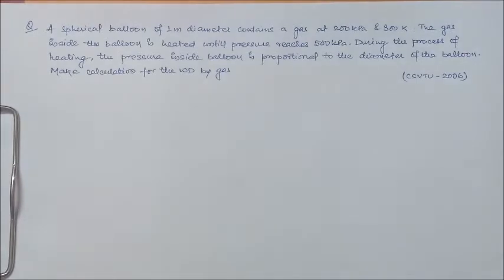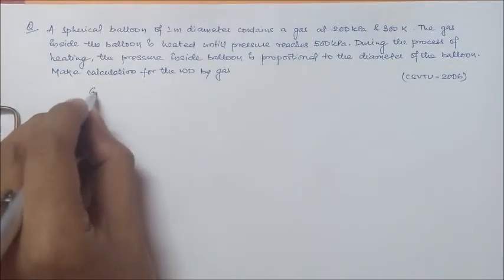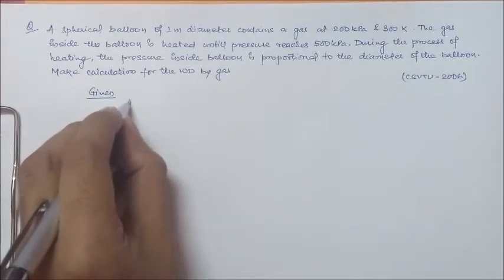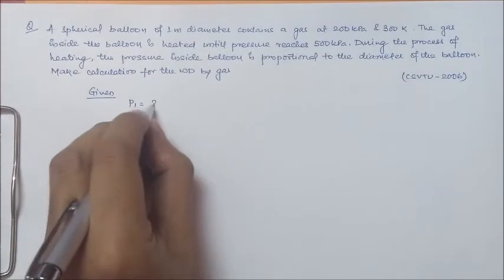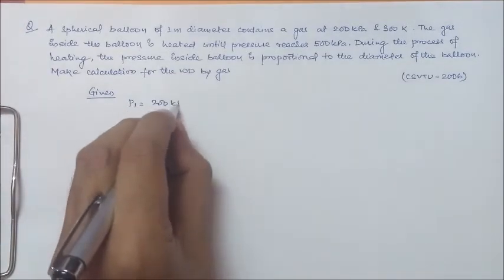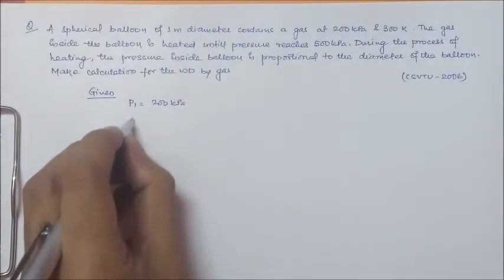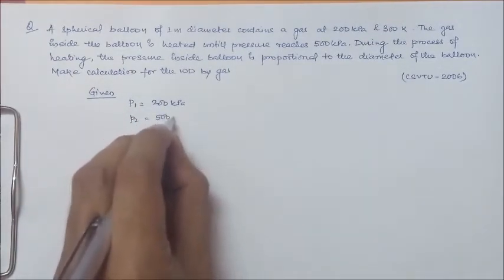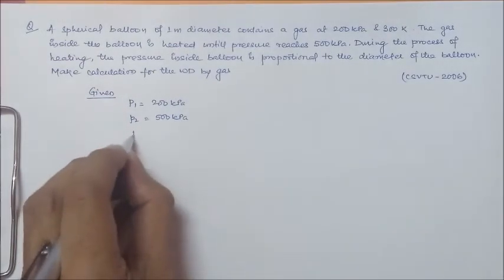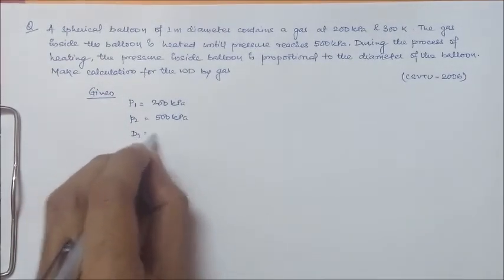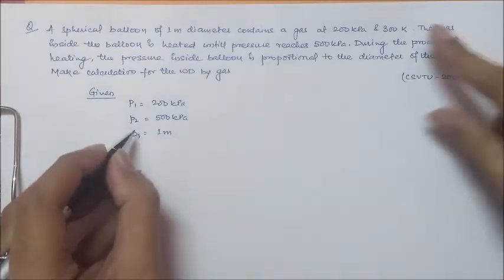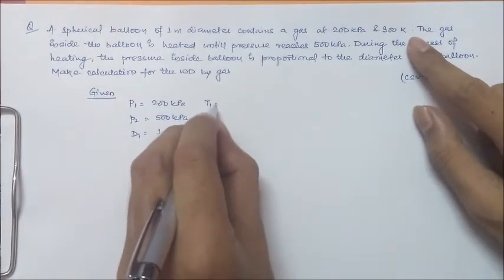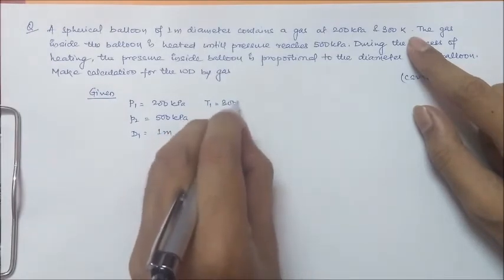So we have started the question by writing down the given values. Given: we have P₁ equal to 200 kilopascal, the initial; P₂ as 500 kilopascal; D₁ as 1 meter; and there is a temperature also, T₁ initial temperature as 300 Kelvin.